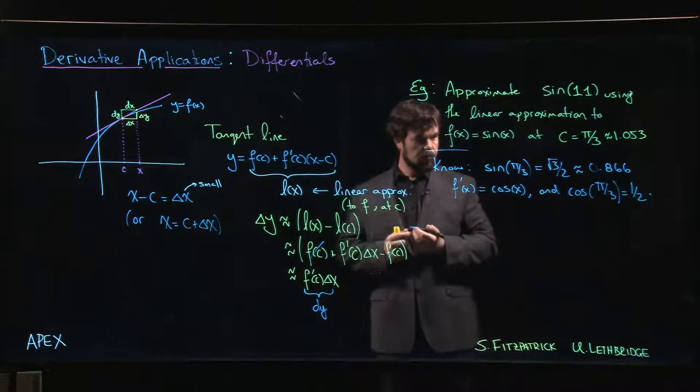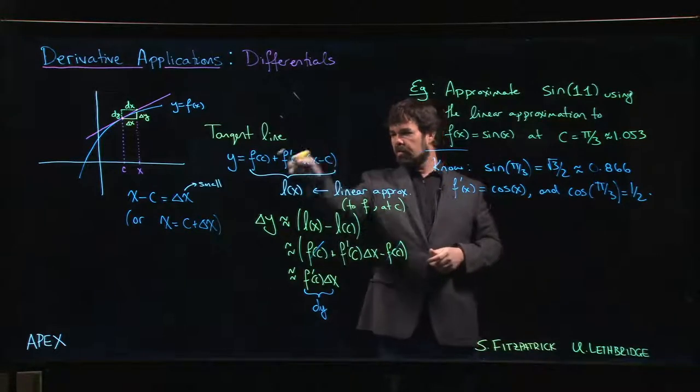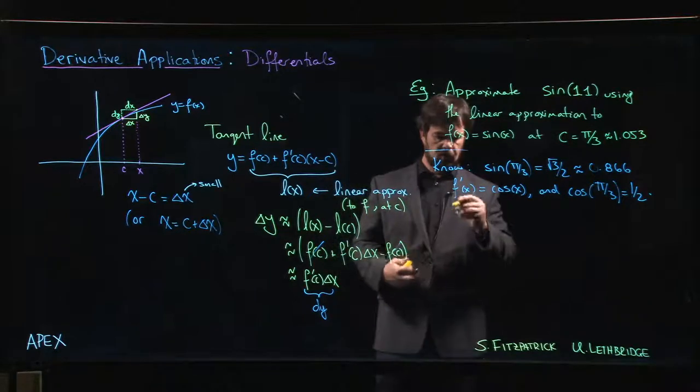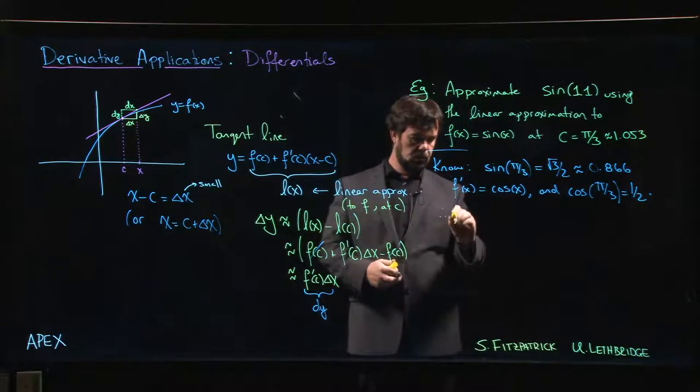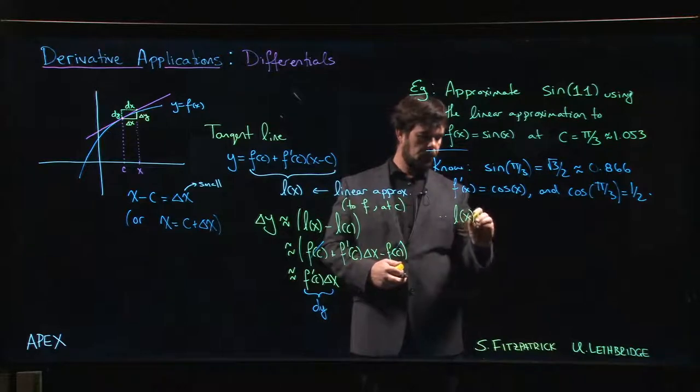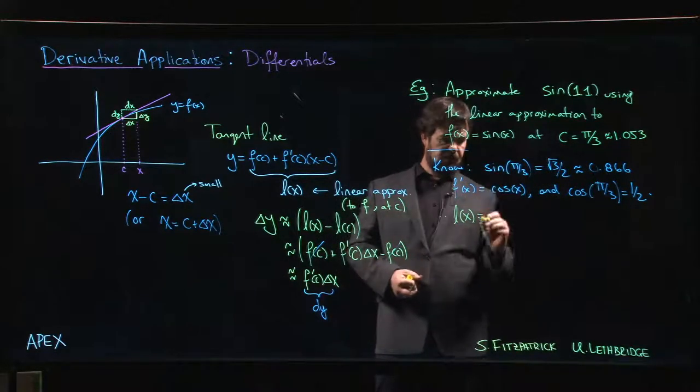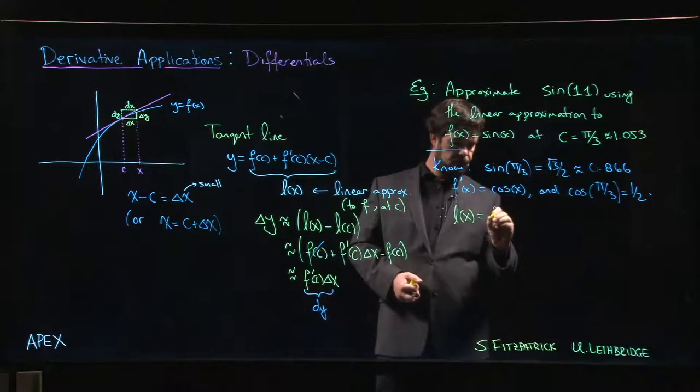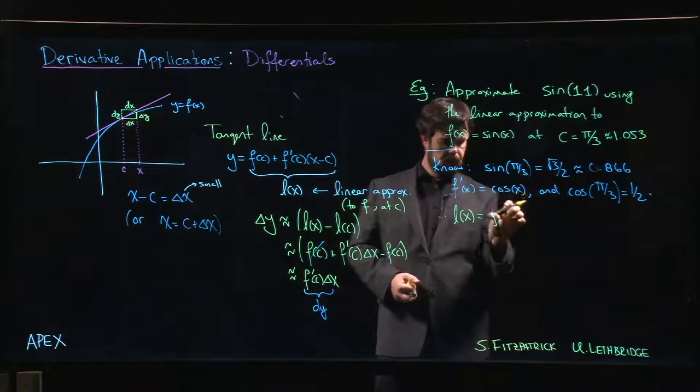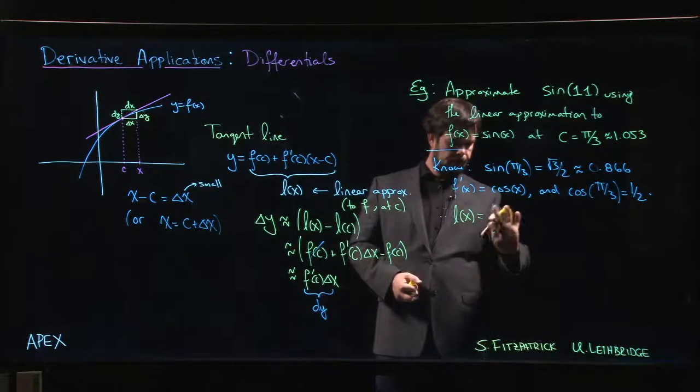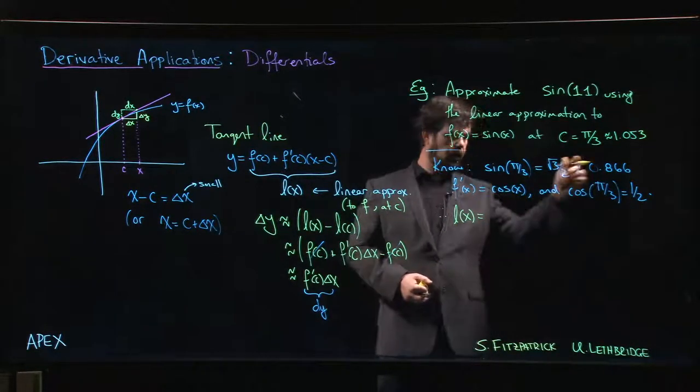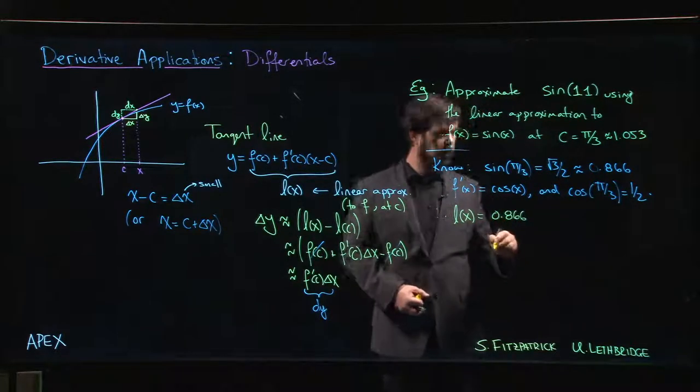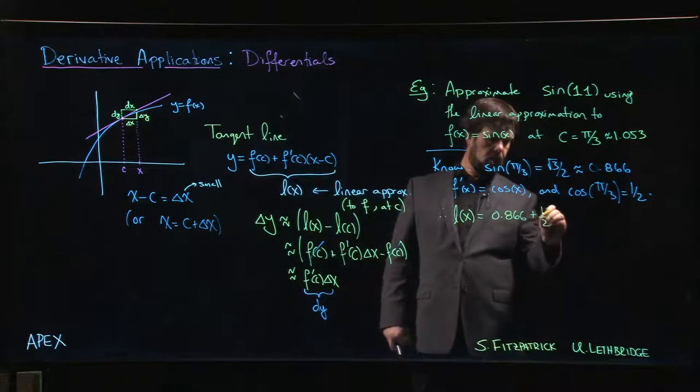Alright, so now we can form this tangent line approximation. We can set up this L of x, so L of x, the linear approximation, is going to be f of c. So in this case c is pi over three.